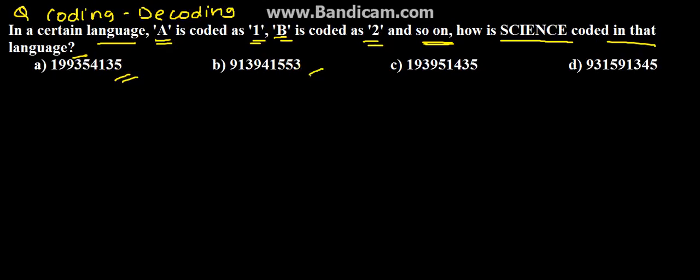There are four options. A is coded as 1 and B is coded as 2, and so on. That means C will be coded as 3, D will be coded as 4. This represents the position of the alphabets.